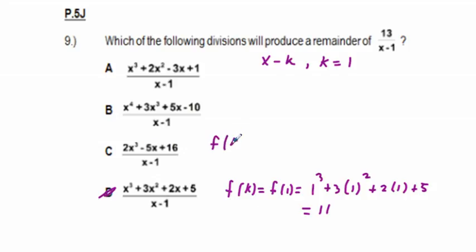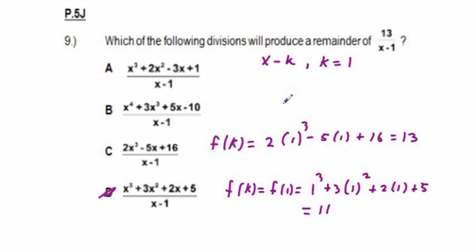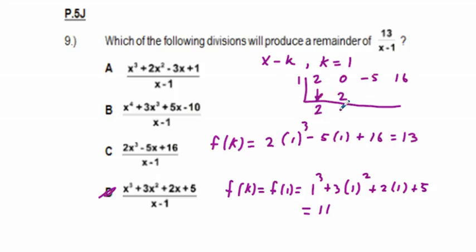We can verify with synthetic division for choice C: using divisor 1 and coefficients 2, 0, -5, 16 — bring down 2; 1×2=2, 0+2=2; 1×2=2, -5+2=-3; 1×(-3)=-3, 16+(-3)=13. The remainder is 13, confirming C is our correct answer.